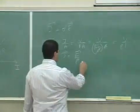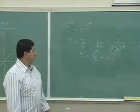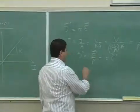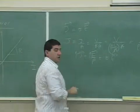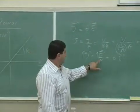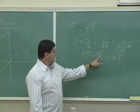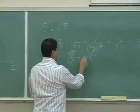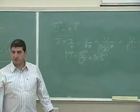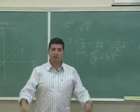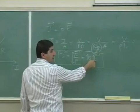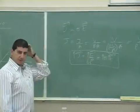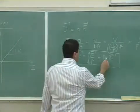Since one over resistivity is conductivity sigma, we get J equals sigma times E. This says: if you set up a certain electric field in a wire, there's going to be current flowing through that wire. The more electric field you set up and the greater the conductivity, the greater the current density will be. It makes perfect sense.